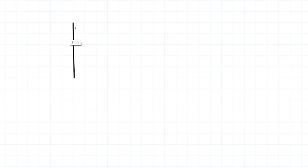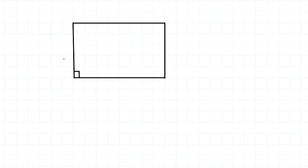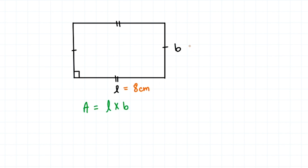Now, what if we have a parallelogram but all its angles are 90 degrees? Then we get a rectangle. In a rectangle, opposite sides are equal, angles are 90 degrees, and we denote the sides as length (L) and breadth (B). The formula for the area of a rectangle is L times B. For example, if the length is 8 centimeters and the breadth is 4 centimeters, the area is 8 times 4, which is 32 centimeters squared.